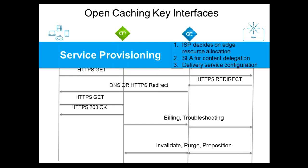Think about Akamai — if they have a customer like nba.com that they typically deliver traffic for, and a service provider has open caching nodes installed, Akamai would be able to delegate the delivery of nba.com content to that service provider. Service provisioning involves an agreed-upon SLA and delivery service configuration.